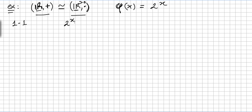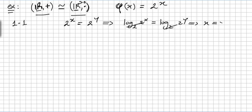Proving one-to-one: suppose that 2 to the power of X equals 2 to the power of Y. You take log base 2 on both sides, and this implies that X equals Y. So this proves that phi is one-to-one — it is injective. If two images are equal, the objects will be equal.